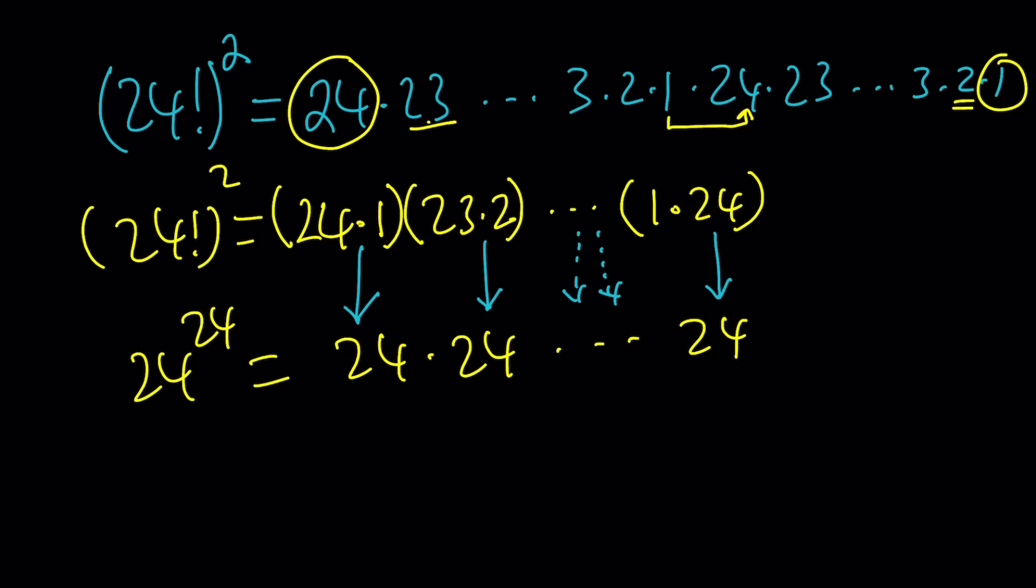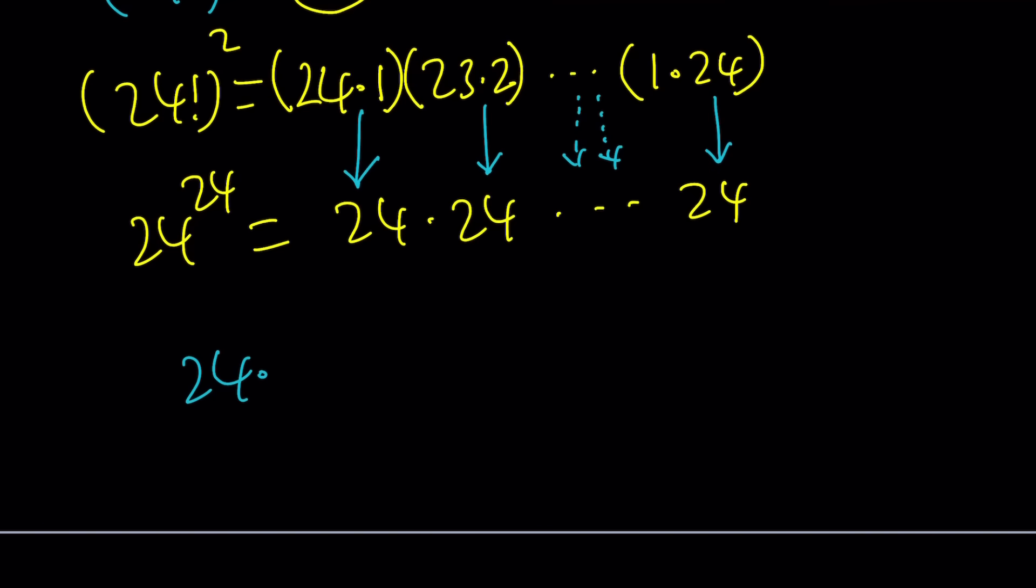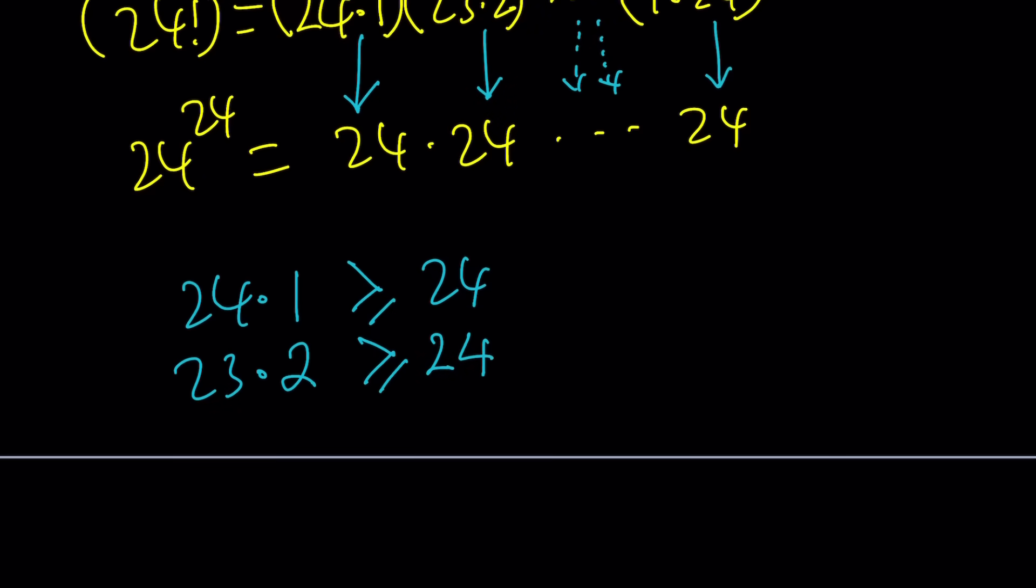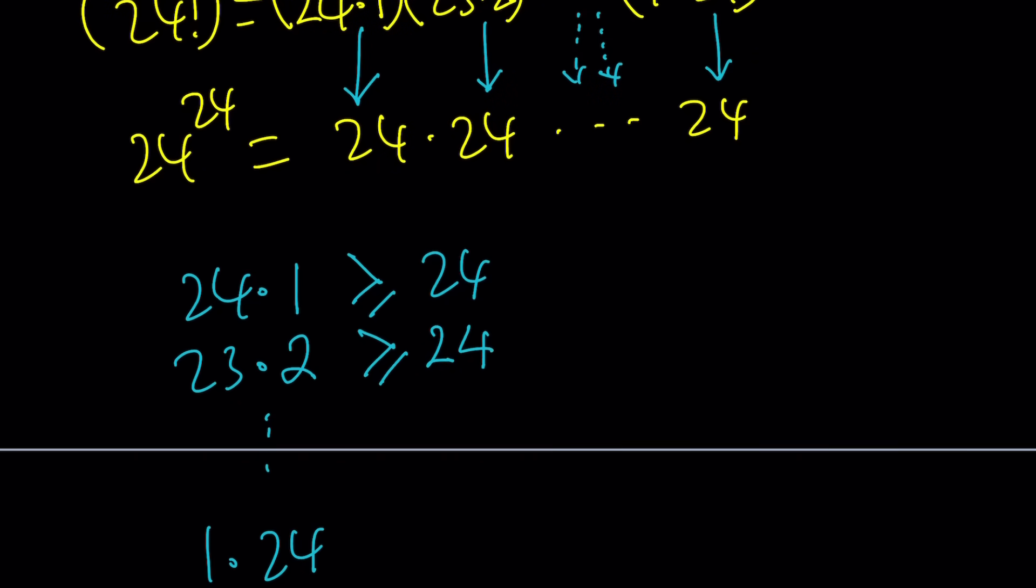Here, I want to compare 24 times 1 to 24. Obviously, 24 times 1 is 24, which is greater than or equal to 24. Let's look at the second group. Second group is even better, because 23 times 2 is 46, which is definitely greater than 24. But I can write it as greater than or equal to, because if A is greater than B, then A is greater than or equal to B. Continue in this manner, all the way down to 1 times 24, and notice that every number is repeated, because 24 factorial is squared, and obviously, this is going to be greater than or equal to again.